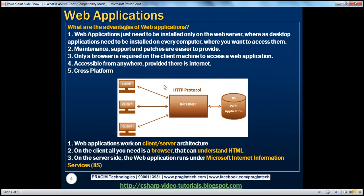Now let us see what the architecture of a web application is and how web applications actually work. If you look at the diagram here, we have different clients and users, and a server which has the web application. If I want these users to access that web application, I don't have to install anything on the client machines — all I need on the client machines is a browser that can understand HTML. I install the web application on the web server. If it's an ASP.NET web application, on the web server you install something called IIS — Internet Information Services — which we will talk about in a later session. IIS is used to host Microsoft ASP.NET web applications, and ASP.NET web applications run under IIS.